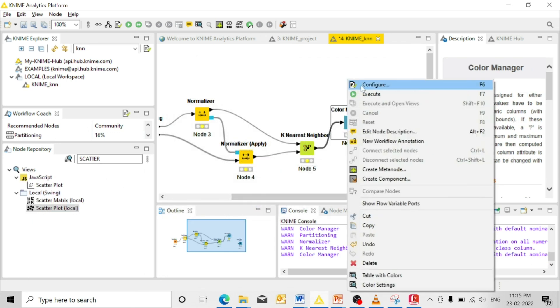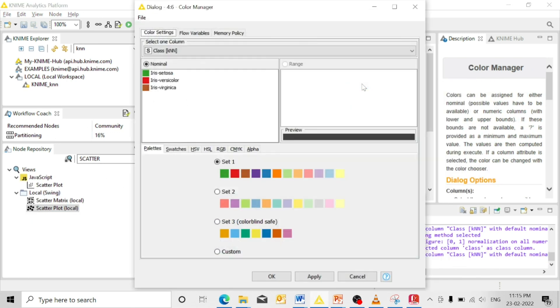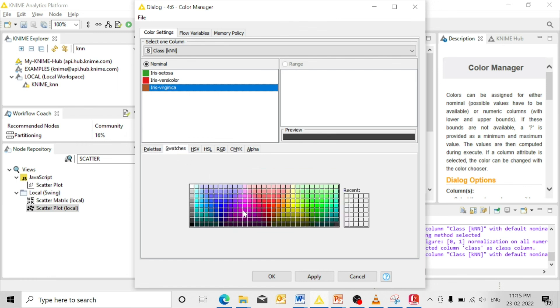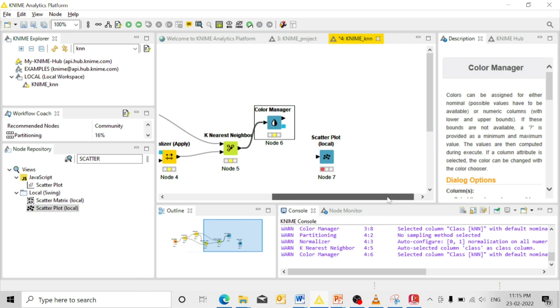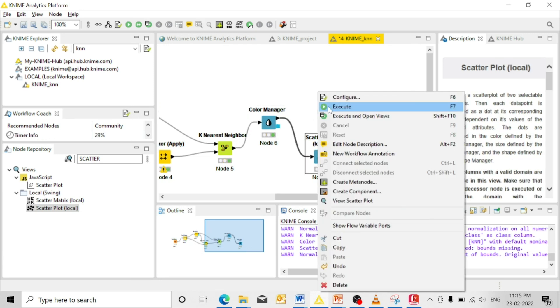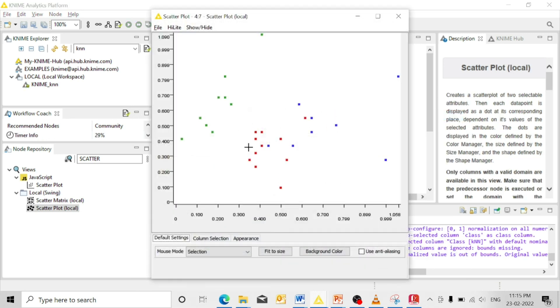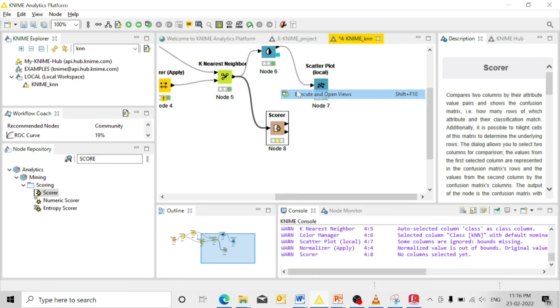You can configure the color manager with three colors. I set those with green color, you can change the color. OK, apply. Now execute and open view so that I got a classification like this. Execute and open view. It shows accuracy is 96.6%.